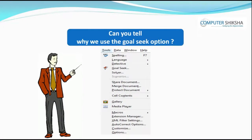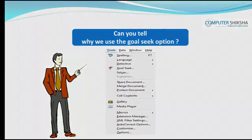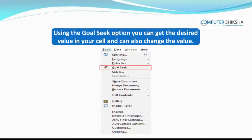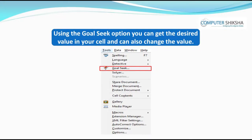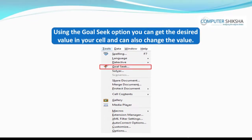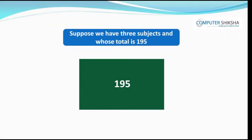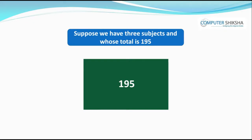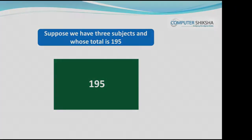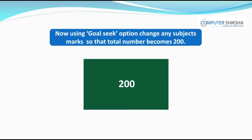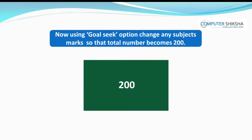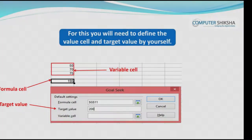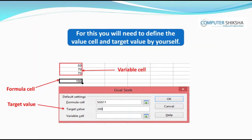Can you tell why we use the goal seek option? Using goal seek, you can get the desired value in your cell and change the value. Note that this option will work only on formulas. For example, if marks of three subjects are 50, 70, and 75, totalling 195, and you want the total to be 200, goal seek will change one subject's marks so the total becomes 200. You will need to define the value cell and target value yourself.